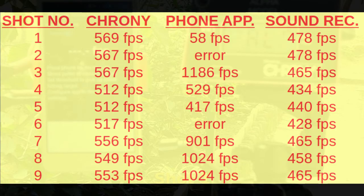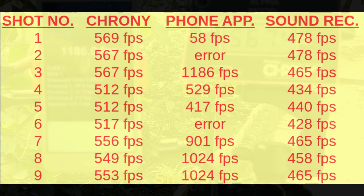Now here are the results. On the left you can see the shot numbers, and the chrony velocities are seen next to that. The chrony velocities are pretty consistent, except for three that are a little slower — those are a different brand of pellet. The phone app was hopeless: it gave wild readings ranging from 58 feet per second to over 1000 feet per second, was completely inconsistent, and kept taking readings when there were no readings to take.